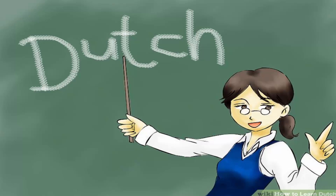This is the right person. She says, yes, certainly, or yes, that's right. Jazeker. My name is D. Janssen. Mijn naam is D. Janssen. Ik heet D. Janssen.